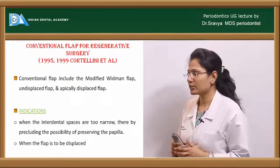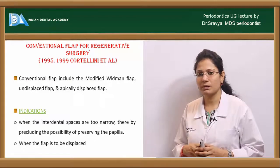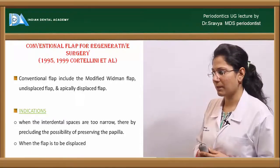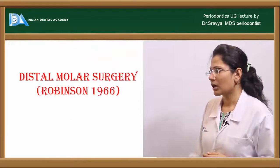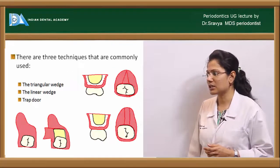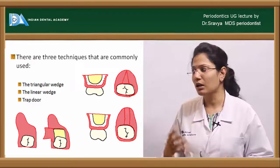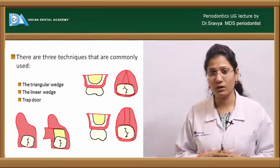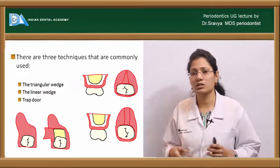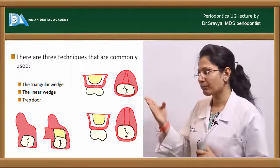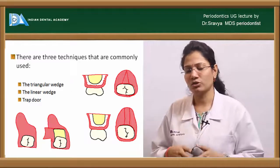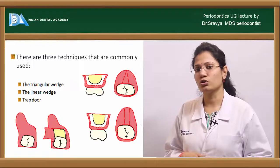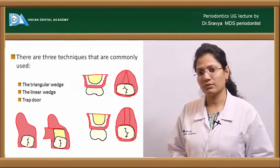Conventional flaps for regenerative procedures — including the modified Widman, undisplaced, and apically displaced flap — are indicated when interdental spaces are too narrow to preserve the papilla or when the flap is to be displaced. For distal molar surgery, given by Robinson in 1966, three techniques are used: the triangular wedge technique and the linear wedge technique. A crevicular incision is given, then two parallel incisions along the alveolar ridge, the triangular wedge of tissue is removed, the area is debrided, bone graft is placed if needed, and the site is sutured.